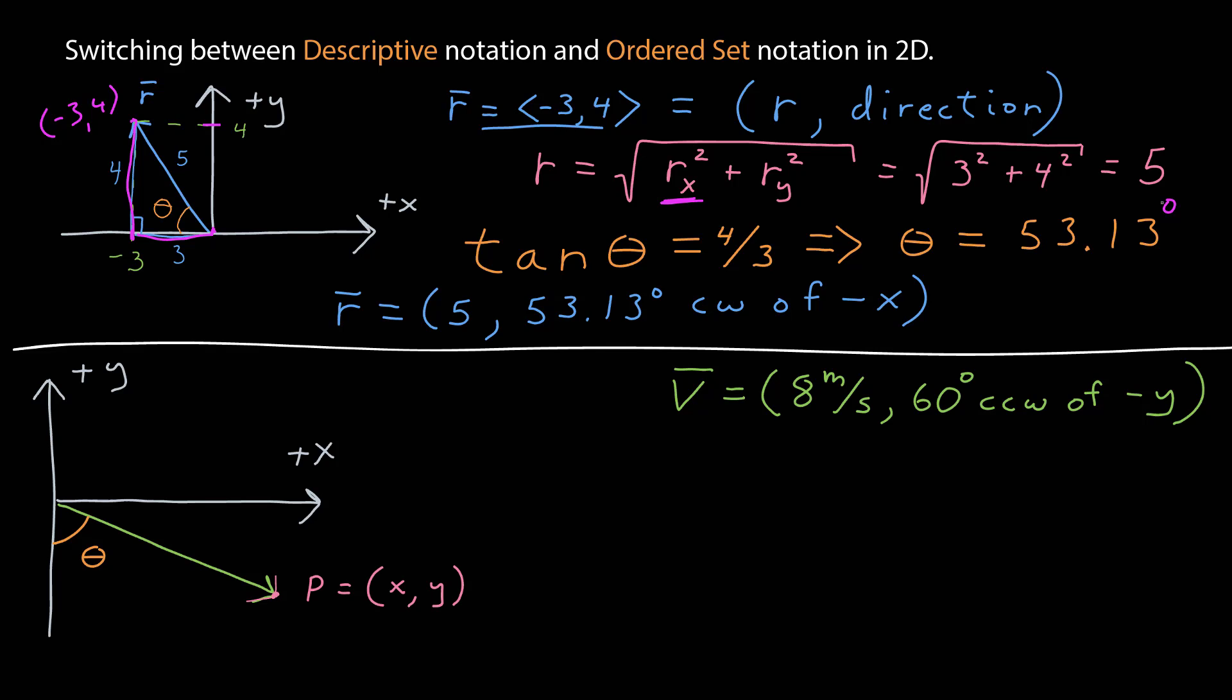If I want an ordered set notation, that means I need to find the point xy at the tip of the vector since its tail is already at the origin.